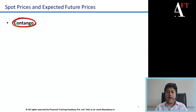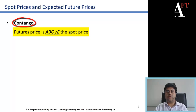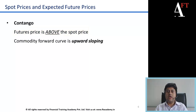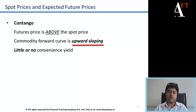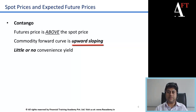The markets are said to be in contango when the futures prices are above the spot prices. The current futures price of one month or two months is above the spot price, and that is because the convenience yield is little or zero. In that case, the commodity forward curve is an upward sloping curve — futures prices are above the spot price, so the curve slopes upwards.